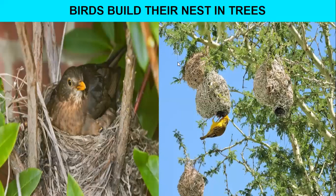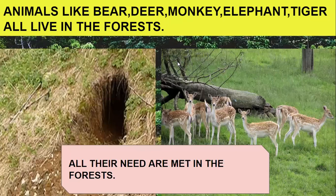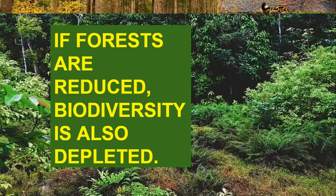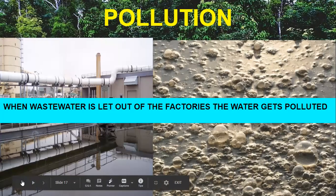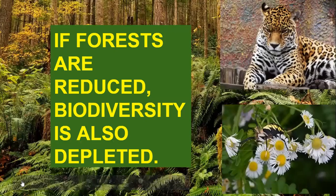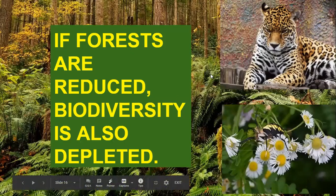Birds build their nests in the trees. If there is no tree, where will the birds go to build their nest? They will slowly die. All the animals like bear, deer, monkey, elephant, and tiger all live in the forest and all their needs are met in the forest. If the forests are not there, then it will totally reduce the biodiversity — the biodiversity will deplete.